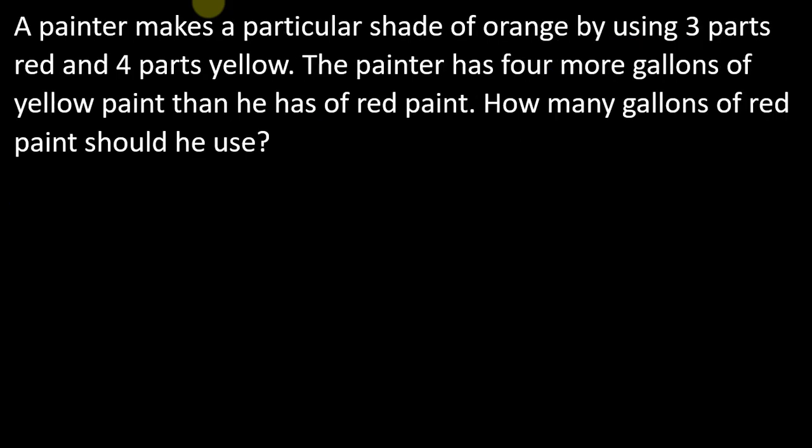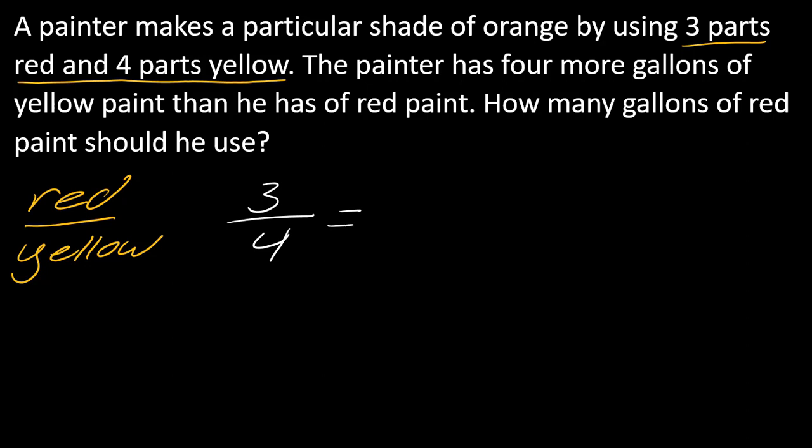I have one more that's a little bit different from the last two. If you want to pause the video, give it a try, then hit play when you're ready. A painter makes a particular shade of orange by using 3 parts red and 4 parts yellow. The painter has 4 more gallons of yellow paint than he has of red paint. How many gallons of red paint should he use? I want to make this red to yellow.